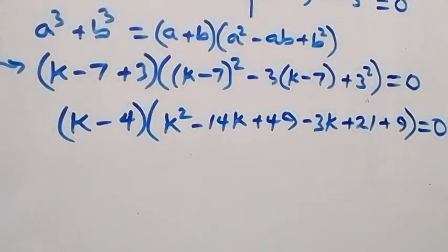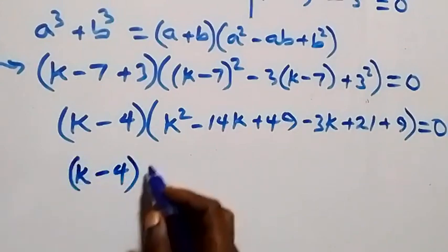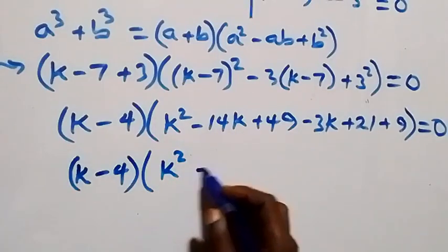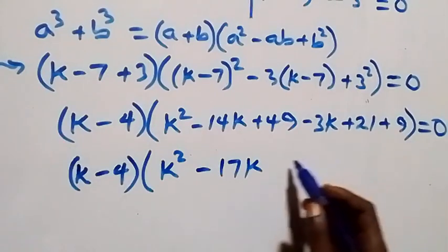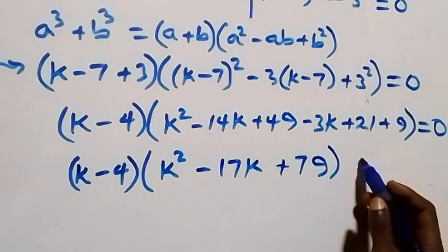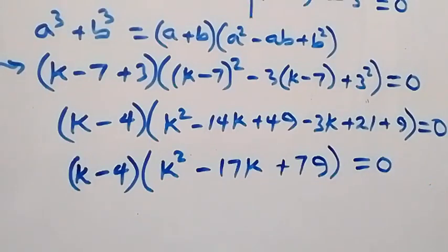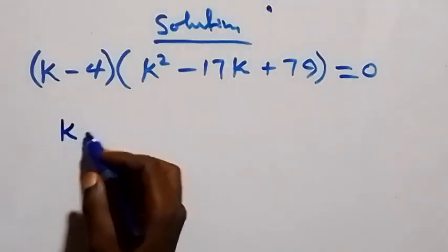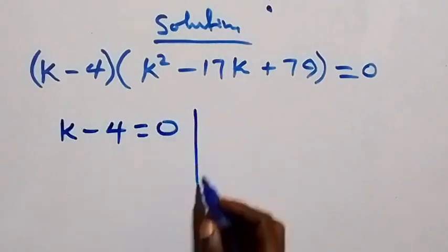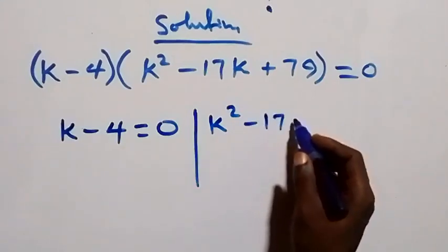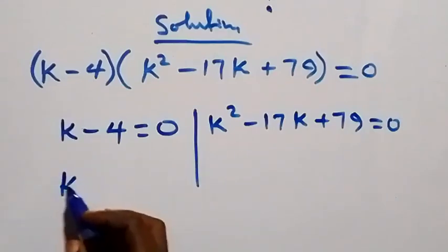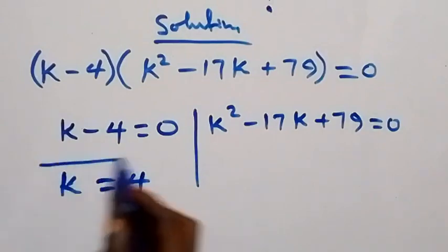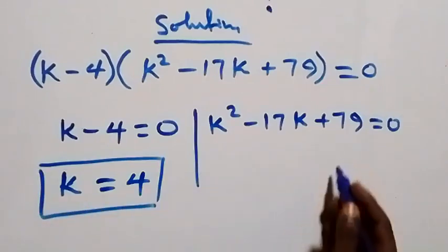Bringing terms together, this becomes k minus 4, times the bracket k squared minus 14k minus 3k giving minus 17k, then 49 plus 21 giving 70 plus 9 giving 79, close bracket equals zero. This implies two sub-cases: k minus 4 equals zero, giving k equals 4, and k squared minus 17k plus 79 equals zero, which is a quadratic equation.